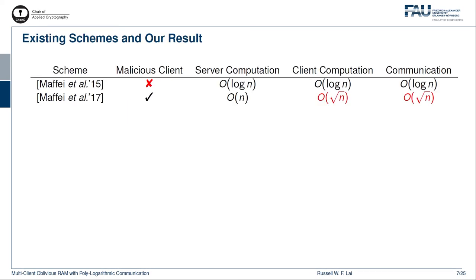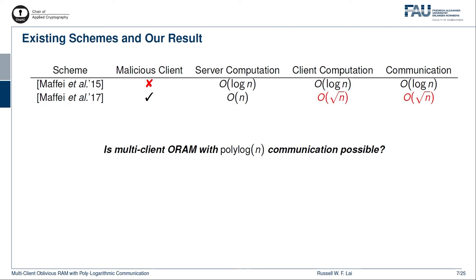MC ORAM is quite young as a notion, and there were only two existing schemes. The first scheme achieves basically the same complexity as a single-client ORAM, but it is not secure against malicious clients. The second scheme is secure against malicious clients, but requires linear server computation and square root client computation and communication. In the same paper, the authors also show that the linear server computation is necessary in the balls and bins model. However, there are no known lower bounds for client computation and communication. Therefore, a natural question to ask is whether MC ORAM with polylog communication is possible. In this work, we answer this question in the affirmative. In fact, our construction achieves the optimal O(log n) client computation and communication.